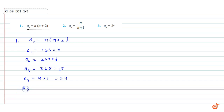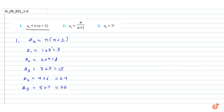And a_5 = 5×7 = 35. So these are the five terms of the function whose n-th term is n(n+2). Now we will do the second question.